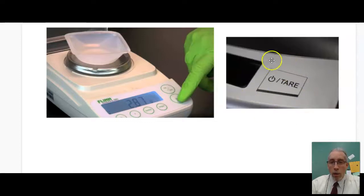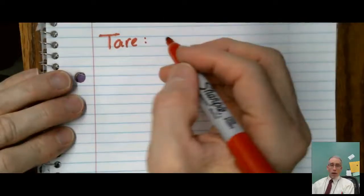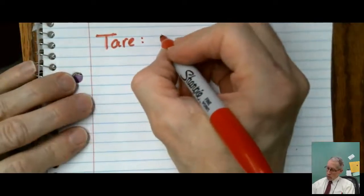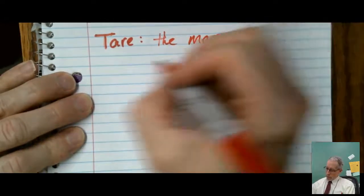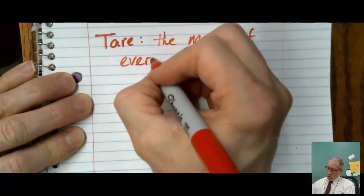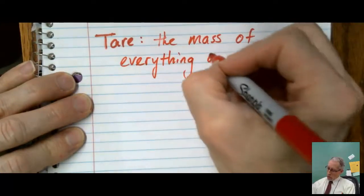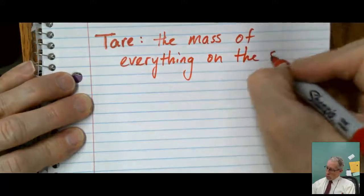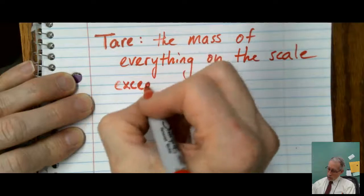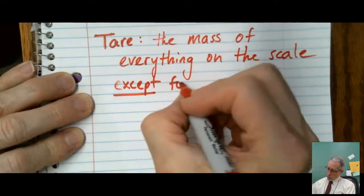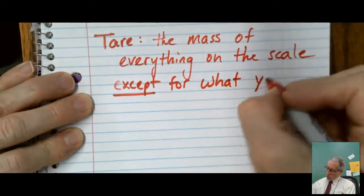Here's a picture of kind of a close-up of what a tare button might look like on a different scale. So I want you to know what that word tare means. So let me kind of describe that and we'll write it down and you'll get that in your notes. Okay, so this word tare means the mass of everything on the scale except for what you are measuring.